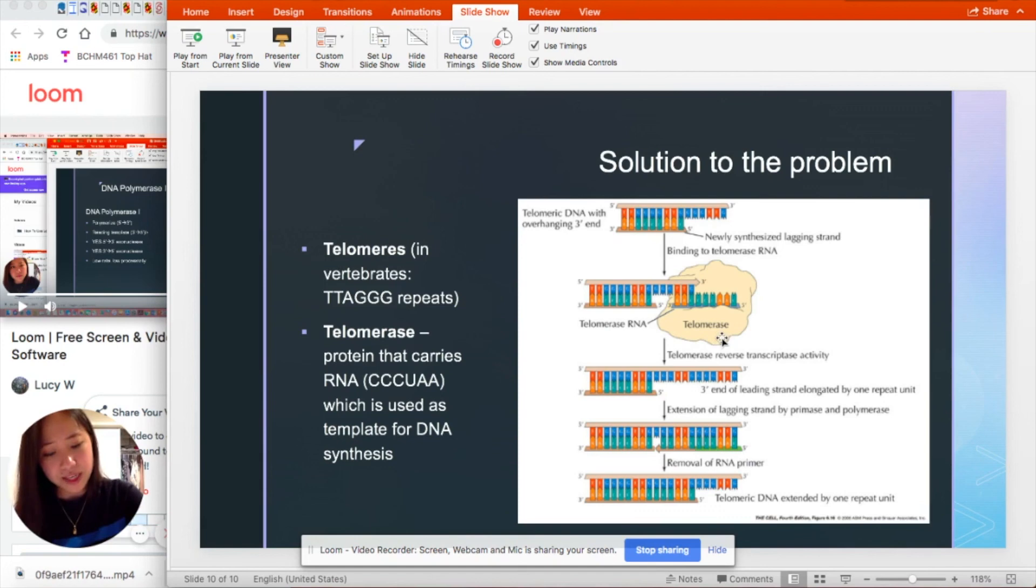And it keeps adding repeats. And in turn, now DNA polymerase as well as primase can come in and fill in the lagging strand. And so both of these strands get elongated.